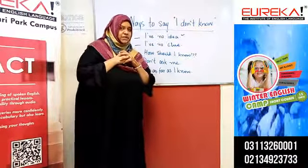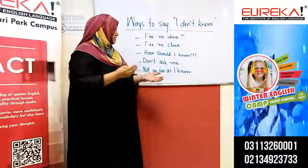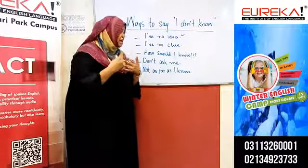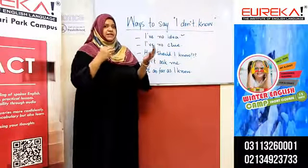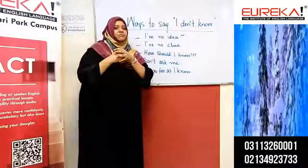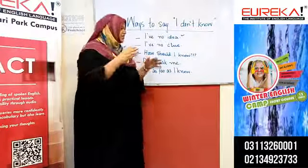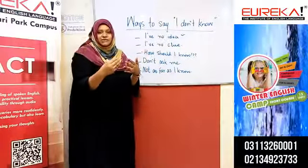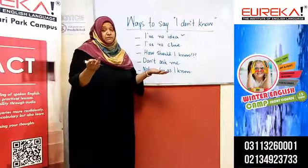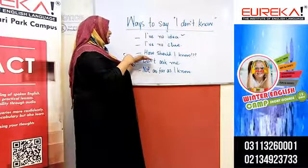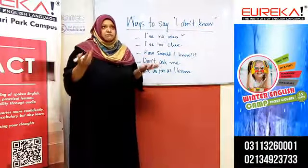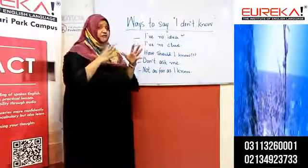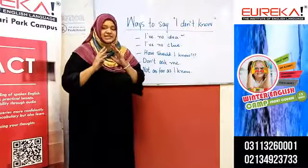Next, if somebody asks you 'Do you know why the teacher hasn't come today?' you can say 'How should I know?' — meaning, is it really my responsibility to know why the teacher hasn't come? It means you are not the appropriate person to answer that question. If you have no concern or relevancy with the matter, you can say 'How should I know?'